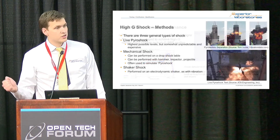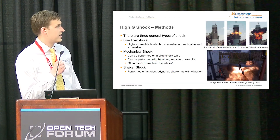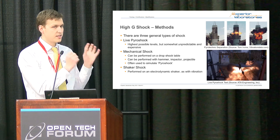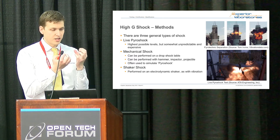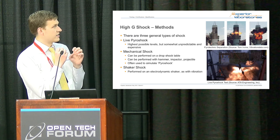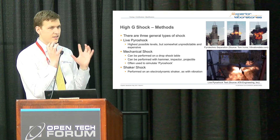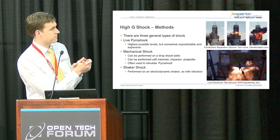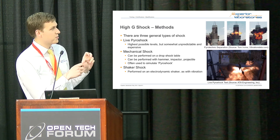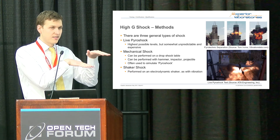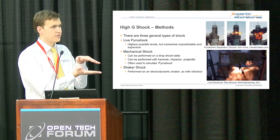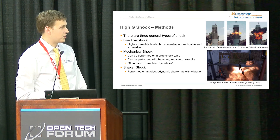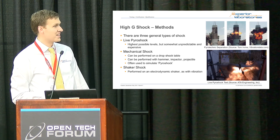Now I'll talk about high G shock. There are three methods of shock. First is live pyro shock — what actually happens on a spacecraft during stage separation when a pyrotechnic device such as a bolt cutter or separation nut explodes, sending a shock wave throughout the structure and exposing electronics to that shock. Some people recreate it with live pyro shock — placing the test part on a platform, putting detonation cord and explosives underneath, detonating them, and measuring with accelerometers. It's really expensive and kind of scary, but it gives you the highest levels.